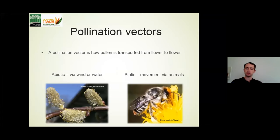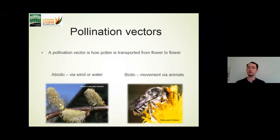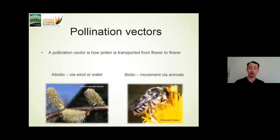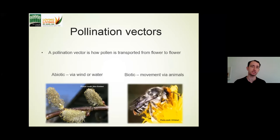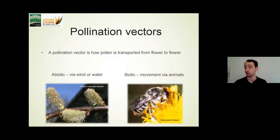The next thing I want to touch on is pollination vectors — just a term for how pollen is transported between flowers. You can have abiotic transfer through wind or water. Willows are an excellent example of a wind-pollinated plant; they produce copious amounts of pollen and utilize air movement to transfer it. This doesn't mean they don't interact with animals — animals still gather that pollen for nutrition — but willows primarily focus on wind pollination.